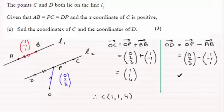Do that sum, and you end up with (minus 1, 3, 2). And so therefore, the coordinates of D will be (minus 1, 3, 2).